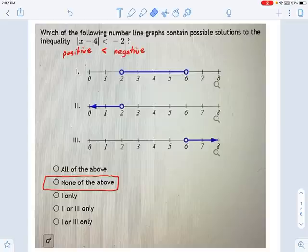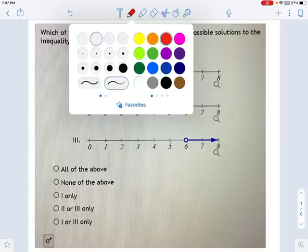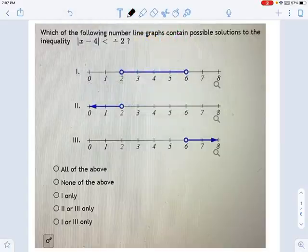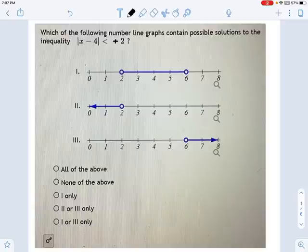So let's change this now and talk about something a little more interesting. There's a bunch of versions of this problem that you might get. Let's say you got something that looked more reasonable and interesting: x minus 4, absolute value, is less than positive 2. How do we deal with that?